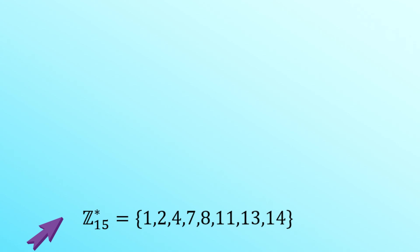So 1 and 2 are fine but 3 we can't retain because the GCD of 3 and 15 is 3. And for example, 10 we can't retain because the GCD of 10 and 15 is 5. It's not equal to 1. So you can see up on the screen Z star 15.